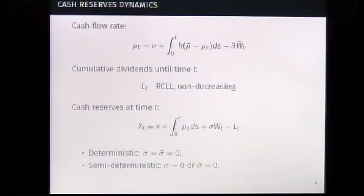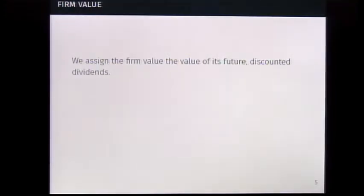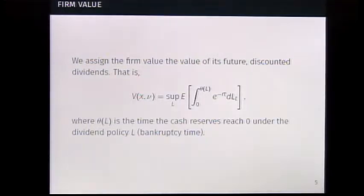I will use the following terminology. I say the problem is deterministic if we remove both sources of randomness. I will call it semi-deterministic if we have only one of the sources of randomness. We study these problems because we can say more about them. We want to look at the total discounted dividends paid out, and we think of that as the firm value. We want to optimize this over all possible dividend policies. The constraint comes in through the theta, which we call the bankruptcy time, time of ruin in the previous talk. It says that when your cash level reaches zero, you're out of the game.